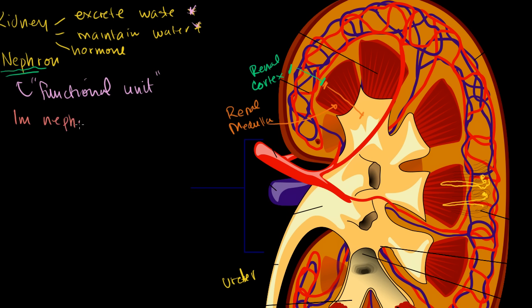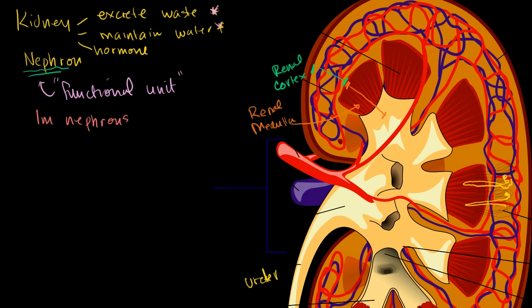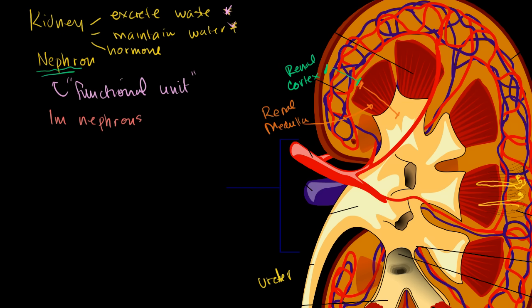Even though nephrons aren't exactly microscopic — their length when they dip down is visible — you can still fit a million of them inside one kidney. Now let's figure out how a nephron filters the blood and makes sure that not too much water and not too much of the good stuff in our blood ends up in the urine.